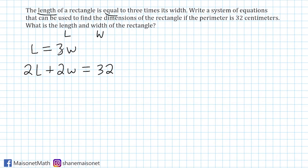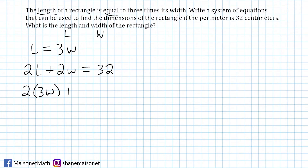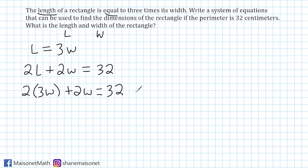Our first equation has the length isolated already, so L equals 3W. This means we can substitute the length in the other equation with 3W. So let's go ahead and rewrite this equation as 2 times 3W plus 2W is equal to 32. All we did is substitute the length with 3W, because the problem states that the length is the same thing as 3 multiplied by W.